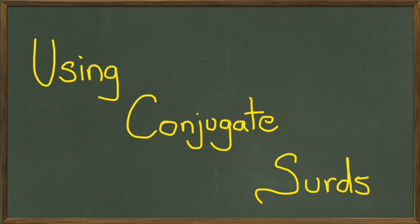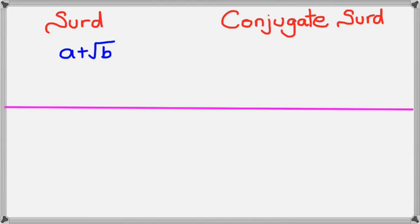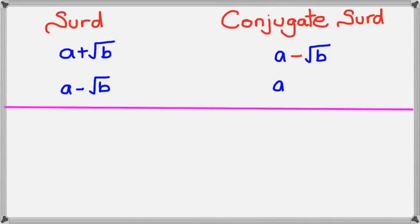Let's have a look at a couple of examples. If we have a surd in the denominator of the form a plus square root of b, then the conjugate surd of that would simply be a minus square root of b. Another example: if we have a minus square root of b, then the conjugate surd would be a plus square root of b.